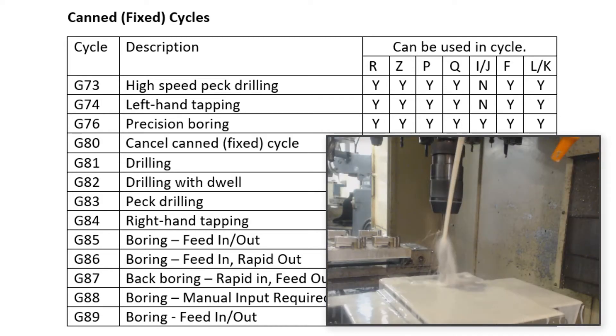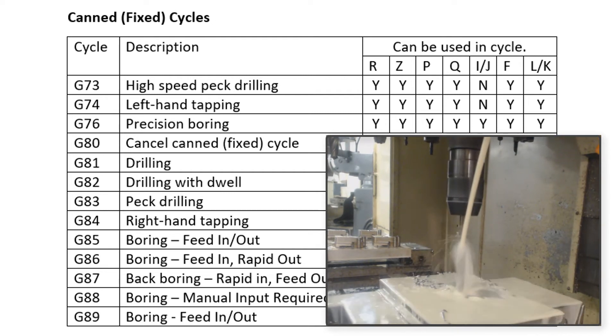The G83 cycle is the same as the G73 cycle except every time the cutting tool drills a peck increment, the G83 cycle brings the tool out of the hole to the programmed R value, whereas the G73 merely backs off the tool tip a small amount to break the chip and continues drilling.